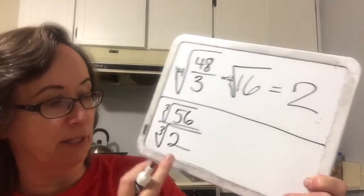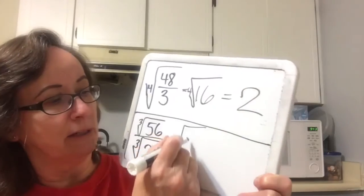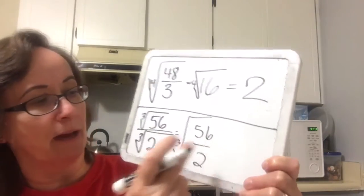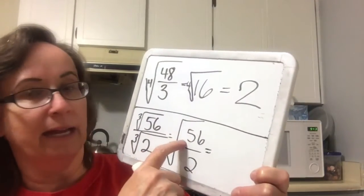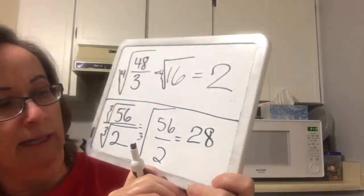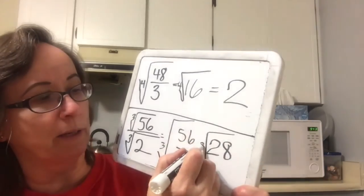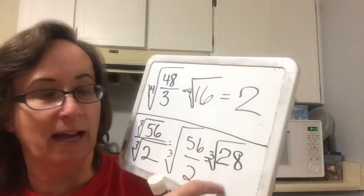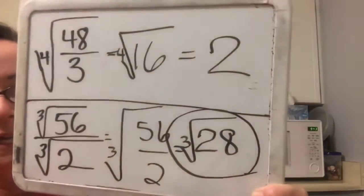56 is not a perfect cube and 2 is not a perfect cube. When we put them all together under one radical, we get the cubic root of 56 over 2. When I divide that out, 28 is half of 56. So now I've got the cubic root of 28, and there are no perfect cubes that are factors of 28. So that would be my answer.